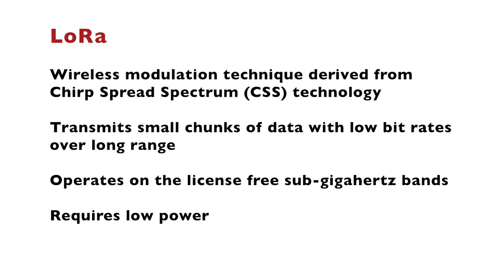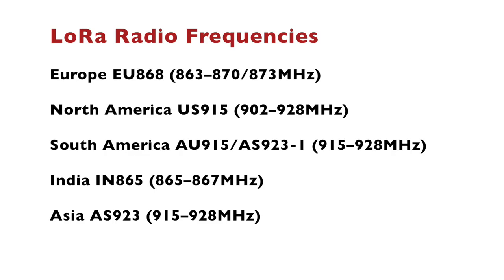Let's compare LoRa peer-to-peer versus LoRaWAN. LoRa is a wireless modulation radio technique derived from the CHIRP spread spectrum technology. LoRa transmits small chunks of data with low bit rates over very long range — up to 15 kilometers. It operates on the license-free sub-gigahertz bands. This protocol requires ultra-low power consumption, which makes it suitable for devices running on batteries. LoRa uses different radio frequencies depending on the location: here in Europe we use 868 MHz, and in North America 915 MHz.